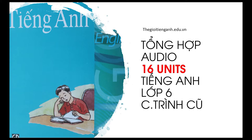Listen and repeat, then practice. Hi, I'm Ba. I'm 12 years old. I'm a student. This is my father. His name is Ha. He's a teacher. This is my mother. Her name is Ngah. She's a teacher, too. This is my sister, Lan. She's 15. She's a student. I'm her brother. How many people are there in your family, Ba? There are four people in my family.